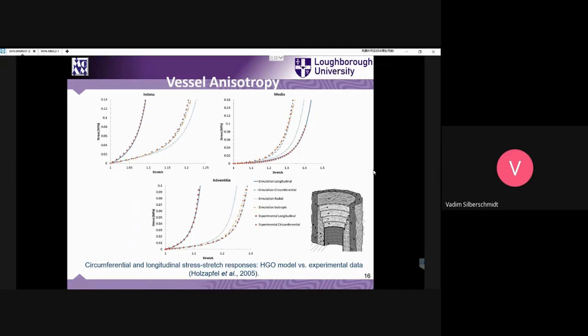Depending on the orientation, the properties can be different. The idea of this section is to consider how different models with different types of anisotropy result in the stress-stretch behavior of the materials. The dotted markers are experimental results obtained for longitudinal and circumferential orientations.